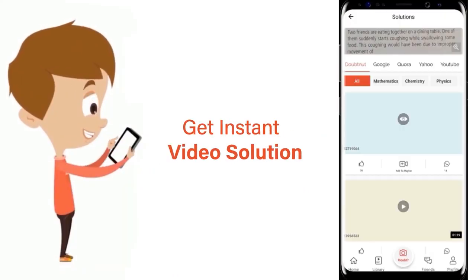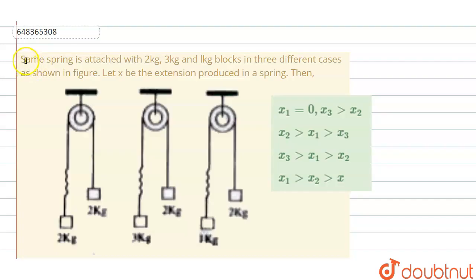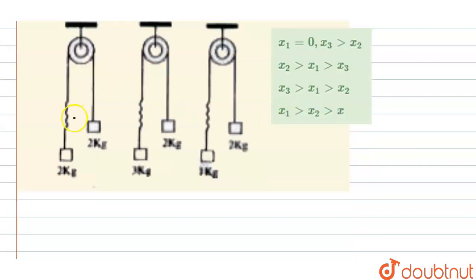Welcome everyone. The question we have here is: the same spring is attached with 2kg, 3kg, and 1kg blocks in three different cases as shown in the figure. Let x be the extension produced in the spring. We have to find the relation between x1, x2, and x3. The extension produced in the spring is due to the force acting on the spring, which is equal to the tension in the string.